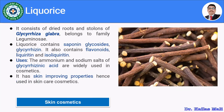Let us see licorice. Licorice is mainly used in skin cosmetics. It consists of dried roots and stolons of Glycyrrhiza glabra belonging to family Leguminosae. Licorice contains saponin glycosides and glycyrrhizin. It also contains flavonoids, liquiritin and isoliquiritin. It is being used in cosmetics; mainly the ammonium and sodium salts of glycyrrhizinic acid are used. It has a skin improving property and is hence used in skin care preparations.